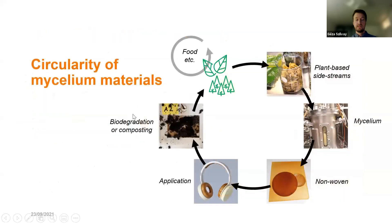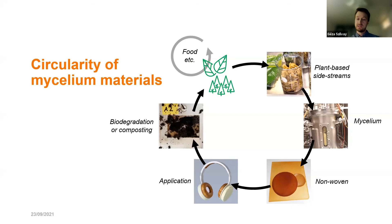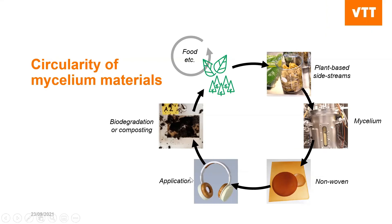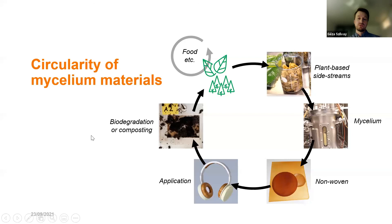The whole concept, as shown in the picture, starts from plant side streams — for example potato peels — to grow the mycelium, produce the material, use it in a product, and hopefully the product will be in use for a long time. Currently there is no recycling process for mycelium, so biodegradation is very important. We have now shown it is possible — through biodegradation the material returns nutrients and raw material to nature, to further grow plants and foods, completing the cycle.